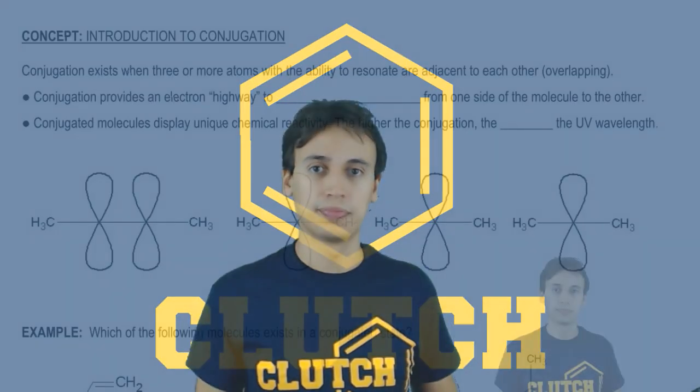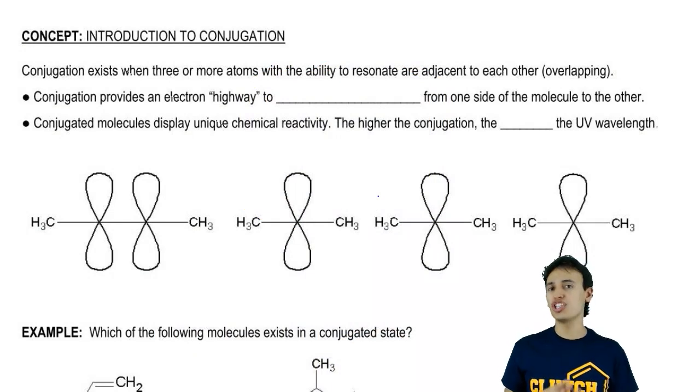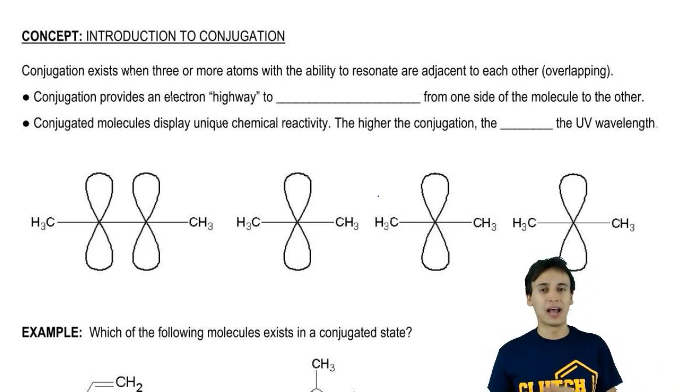Hey guys. Now let's talk about a new concept called conjugation. Conjugation exists when three or more atoms with the ability to resonate are next to each other or back to back.